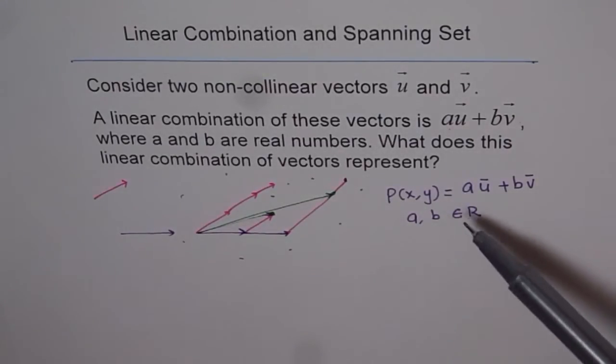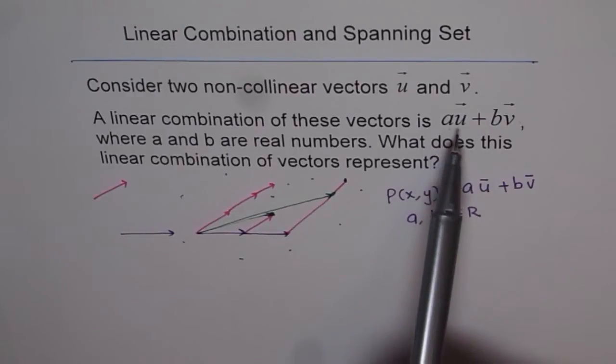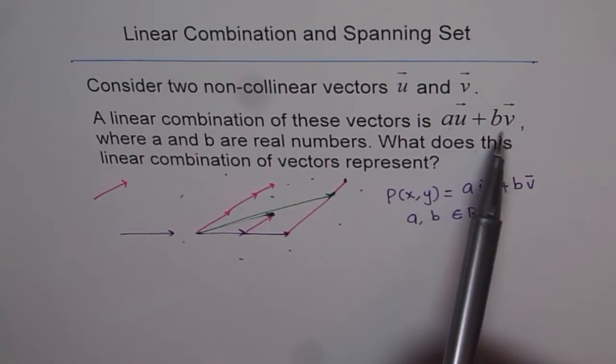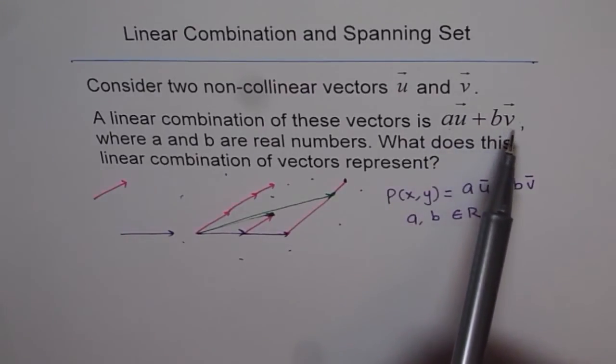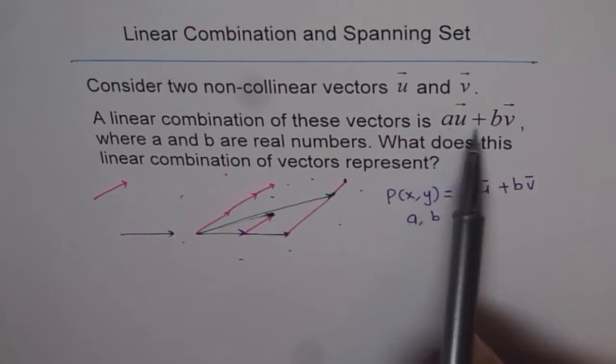So that is a very important thing to understand here. And another way we say the same thing is that the vectors u and v form a spanning set, with which we can represent any vector in the plane by their linear combination.